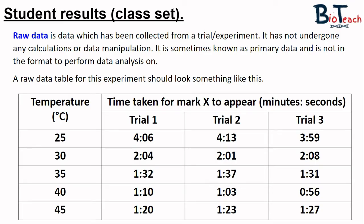We can see here that we've got five temperatures that were tested, and overall we can see that as the temperature increased, we saw the X appear quicker, especially between 25 and 40 degrees, but at 45 degrees it seems it took a touch longer to appear. I also want you to note that the time taken for the X to appear is in minutes and seconds, so we need to manipulate this data and do some calculations in order to represent it in a graph or even to represent it as a mean.